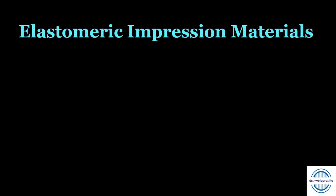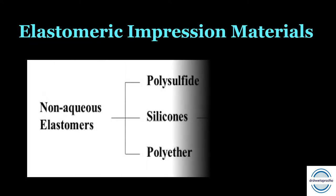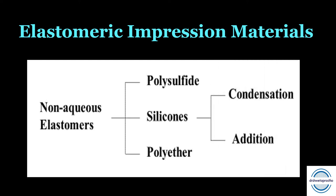The non-aqueous elastomers can be of three types: polysulfides, silicones, and polyethers. Silicones can be condensation silicone or addition silicone. Let us first discuss the polysulfides.